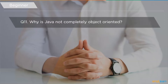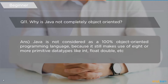The eleventh question is: why is Java not completely object-oriented? Java is not considered 100% object-oriented because of the primitive data types it uses — it still makes use of eight or more primitive data types such as int, float, double, and others. This is the only reason why Java is not considered completely object-oriented.